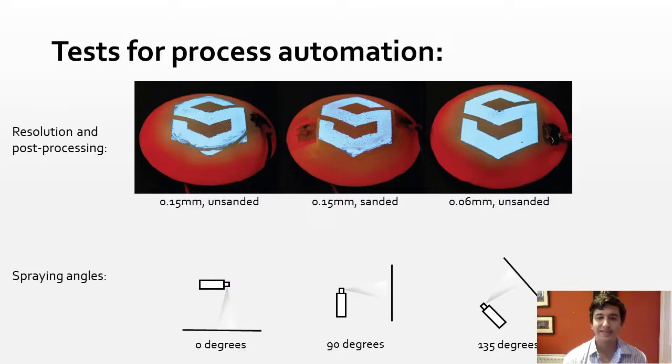We also tested the constraints for automating parts of the Protospray process. A test on 3D printer resolution and sanding showed the importance of layer height and post-processing methods. We also carried out a test on spraying on surfaces at different angles to analyse variation and deposition. We found that the spray plume had a higher concentration in its centre and that particles were drawn downwards on steeper gradients.